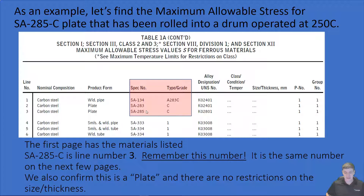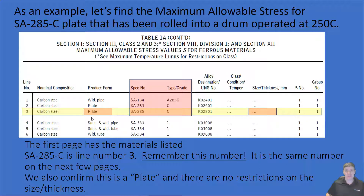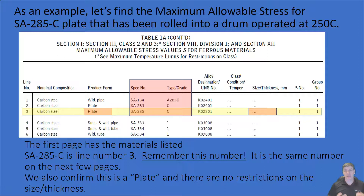Once you've found SA285C, do a couple of things. First, note the line number — in this case, line number three — because that carries over to all the subsequent pages. Then confirm this is the right application by checking the product form; it is a plate, so that makes sense. Also check size and thickness restrictions; some materials may only apply above a certain thickness, like 25 mm, but in this case there are no restrictions, so we move on.